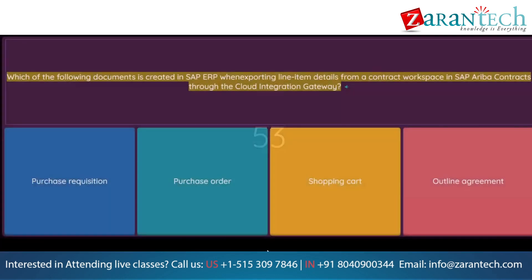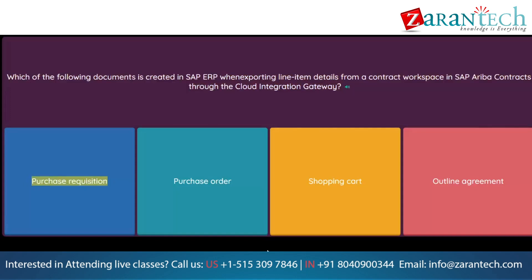Question: Which of the following documents is created in SAP ERP when exporting line item details from a contract workspace in SAP Ariba Contracts through the cloud integration gateway? Option 1: Purchase requisition. Option 2: Purchase order. Option 3: Shopping cart. Option 4: Outline agreement.